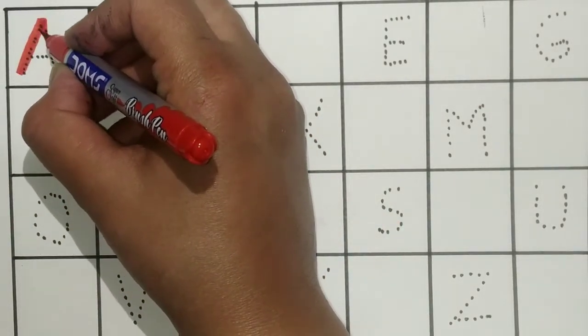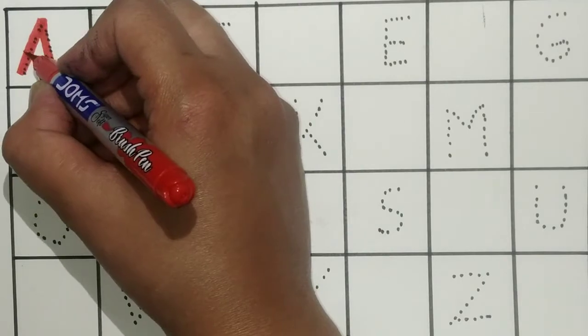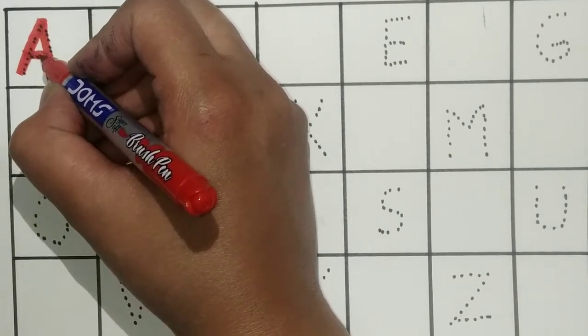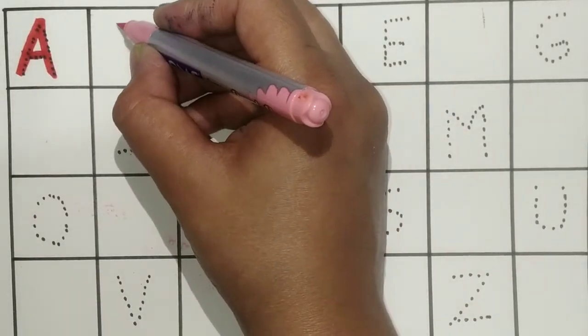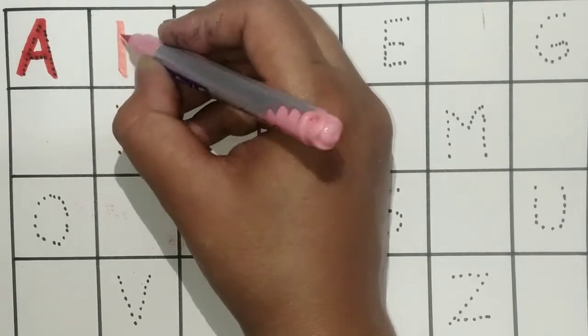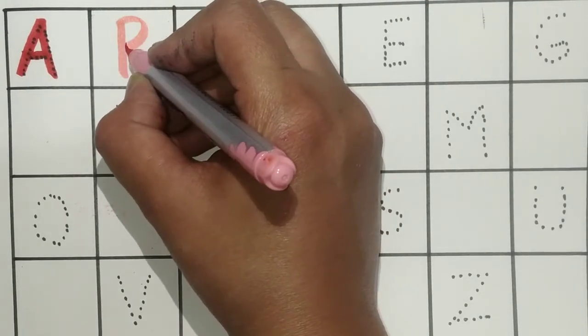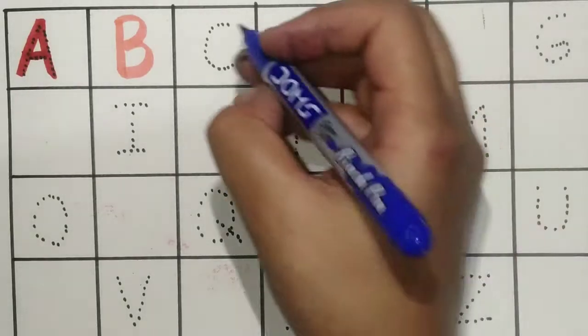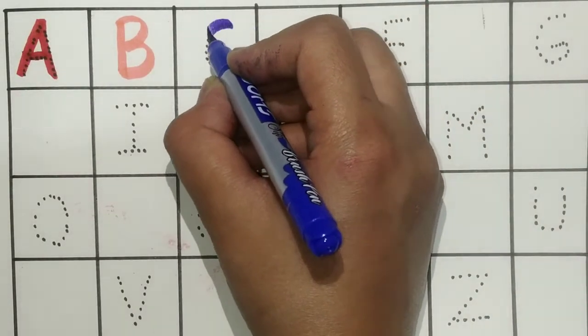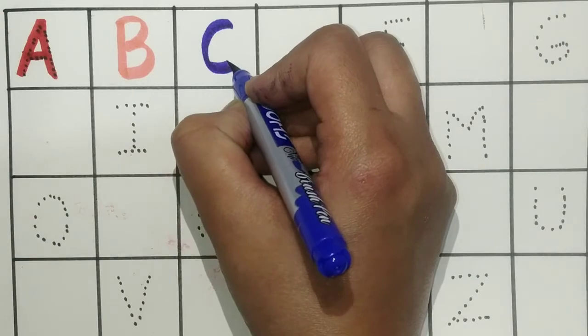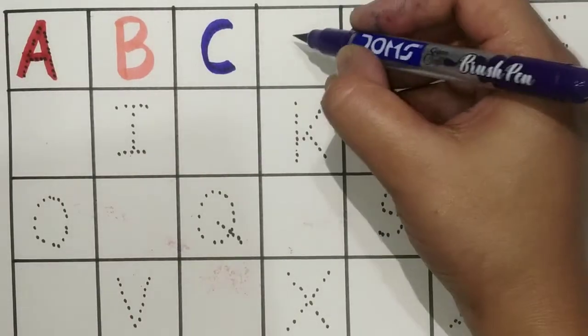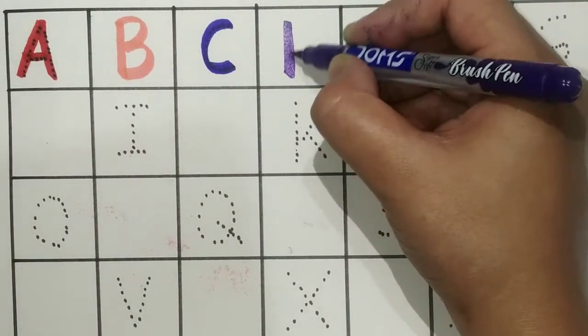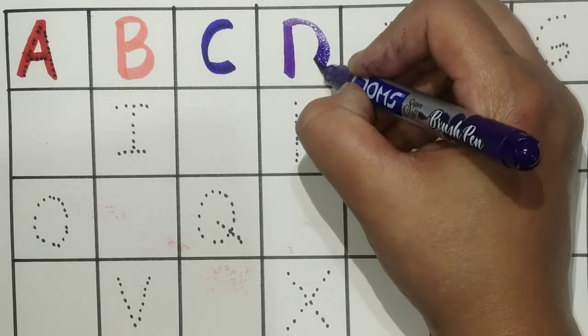A for Apple. B for Ball. C for Cat. D for Dog.